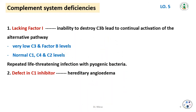Complement system deficiencies: lacking Factor I means inability to destroy C3b, leading to continual activation of the alternative pathway. This is characterized by very low C3 and Factor B levels, with normal C1, C4, and C2 levels. The reason why C1, C4, and C2 levels are normal while C3 and Factor B are very low will be discussed later.